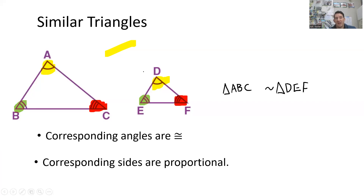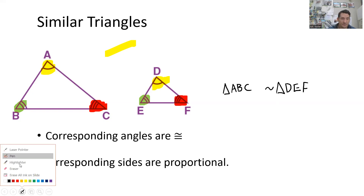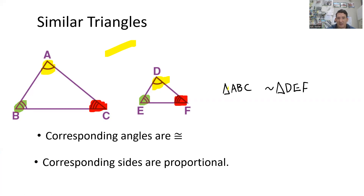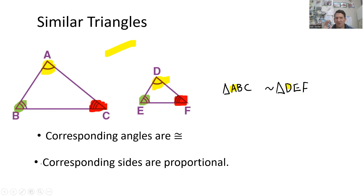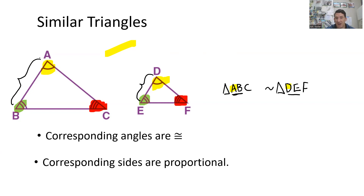You need to list them in order so that since A corresponds to D, they're both listed first. You can list B first, but then you'd also have to list E first - they need to be in the correct order. What's beneficial to this is we can also figure out which sides correspond to which, since orientation can sometimes be confusing when looking at diagrams. So side AB corresponds to side DE, since A and D are listed first in each triangle.